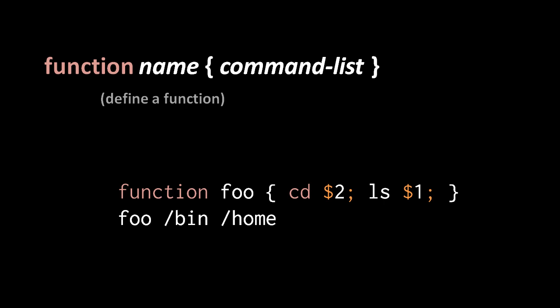This function 'foo' has a body of two commands: first 'cd' with argument $2 (the second argument passed to foo), then 'ls' with argument $1 (the first argument). When we invoke it with '/bin' as the first argument and '/home' as the second, the function first changes the current working directory to '/home' and then lists the contents of '/bin'.